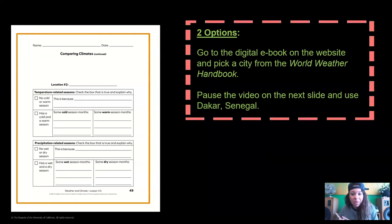Now we're going to move on to page 49. It's the exact same thing as page 48. We're just going to do a different city. So you have two options. You can pause the video and go to the digital ebook on the website and pick a city from the World Weather Handbook, any city you want, and fill out page 49. Or if you don't have access to the World Weather Handbook, you can just stay tuned and we're going to do Dakar Senegal together. So make the choice now and pause the video.